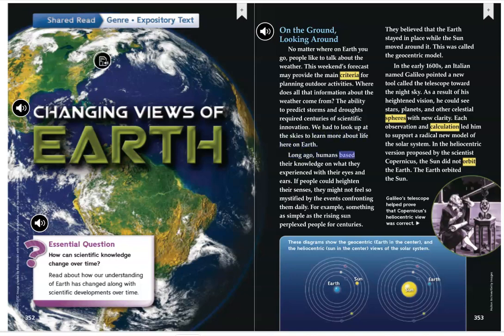Long ago, humans based their knowledge on what they experienced with their eyes and ears. If people could heighten their senses, they might not feel so mystified by the events confronting them daily. For example, something as simple as the rising sun perplexed people for centuries. They believed that the Earth stayed in place while the sun moved around it. This was called the geocentric model.